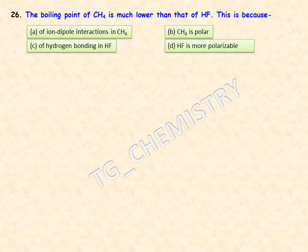We have crossed the halfway mark. The 26th question: the boiling point of CH₄ is much lower than that of HF — why? HF molecules are capable of forming intermolecular hydrogen bonding, causing more HF molecules to bind together, leading to higher boiling points. Compared to HF, CH₄ has a lower boiling point because it lacks hydrogen bonding. Option C is the right answer.